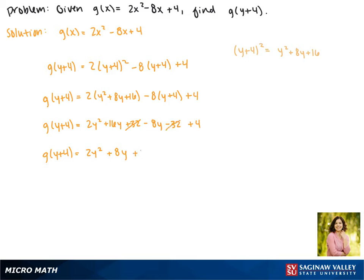leaving us with a constant of 4. So our final answer is g(y+4) = 2y² + 8y + 4.